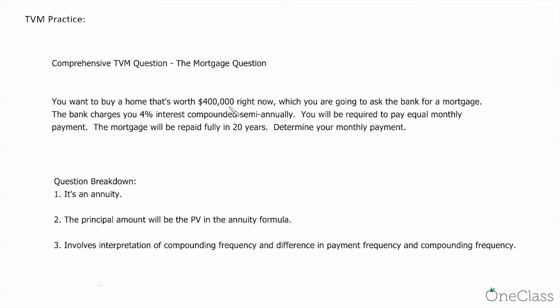The principal amount, the $400,000, will be the PV in the annuity formula.